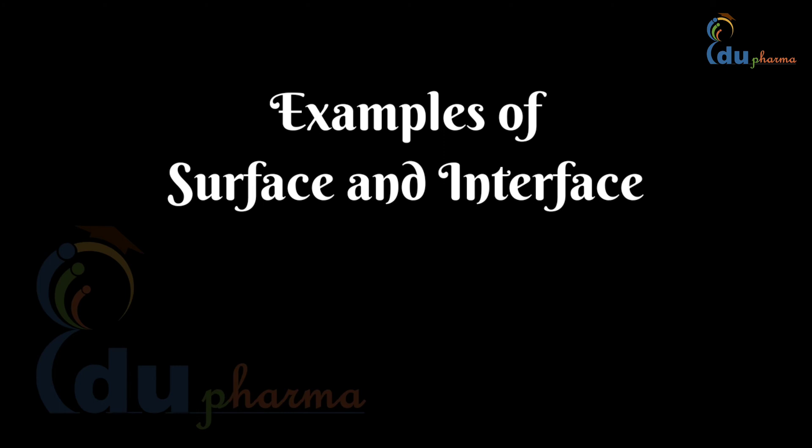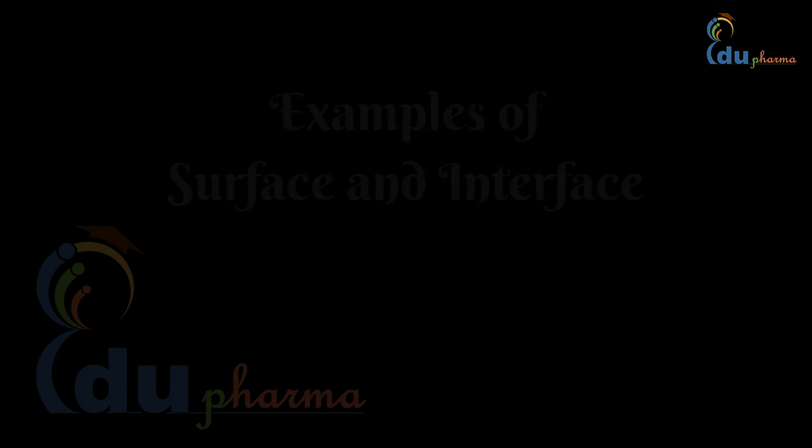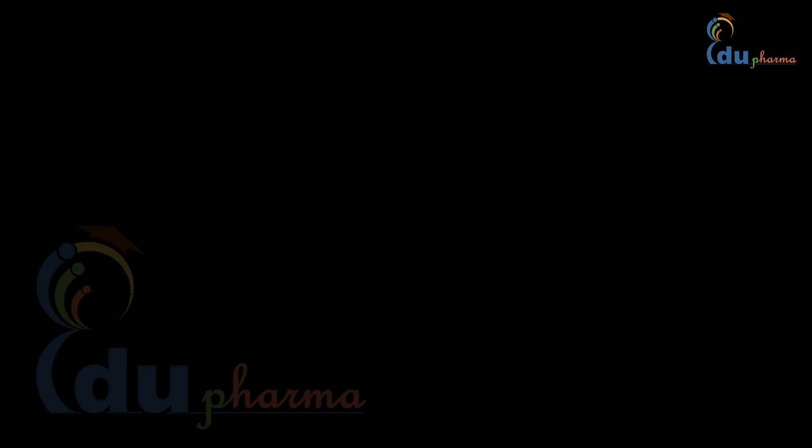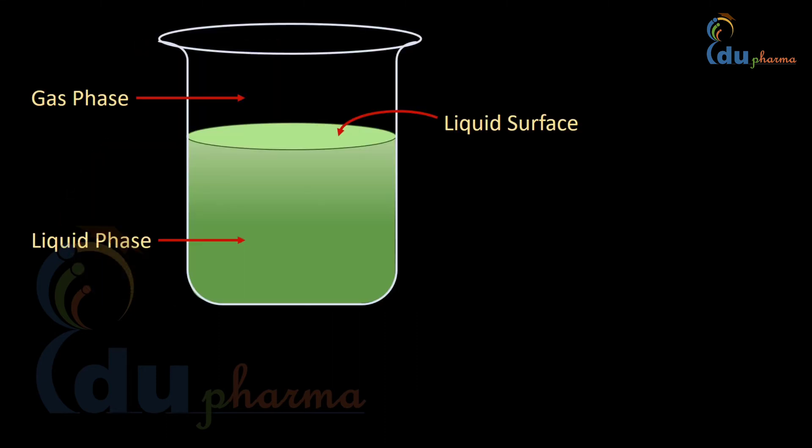Let's talk about some examples of surface and interface. Any solid exposed to the air shows the solid surface, as one phase is solid and other is gas. Water exposed to the air shows the liquid surface.